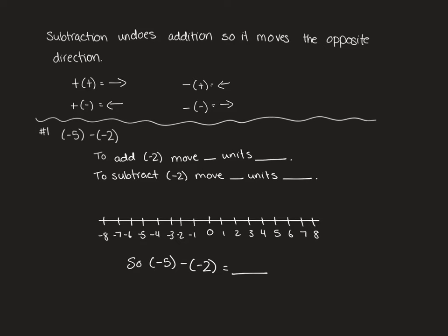For example, if we look at a similar question to question 1, we have -5 subtract -2. The first thing they're going to get us to do is think about what would we do if we were adding -2 instead of subtracting. So to add a negative we would move 2 units to the left.